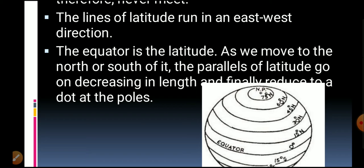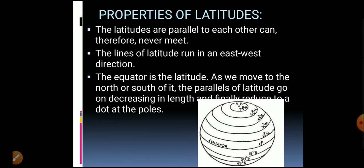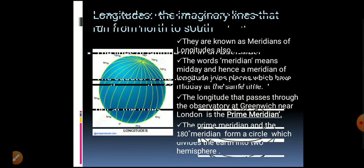Just as when we keep on making circles on a spherical object they eventually reduce to a dot, in the same way these latitudes reduce to a dot at the poles.